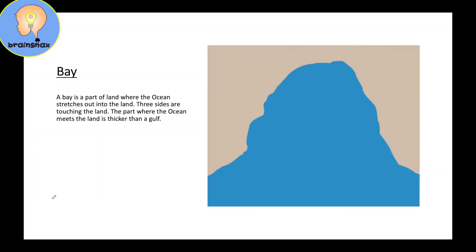The first landform I would like to talk about is a bay. A bay is a part of the land where the ocean stretches out into the land — it goes inside where the land is. Three sides are touching the land, and the part where the ocean meets the land is thicker than a gulf.